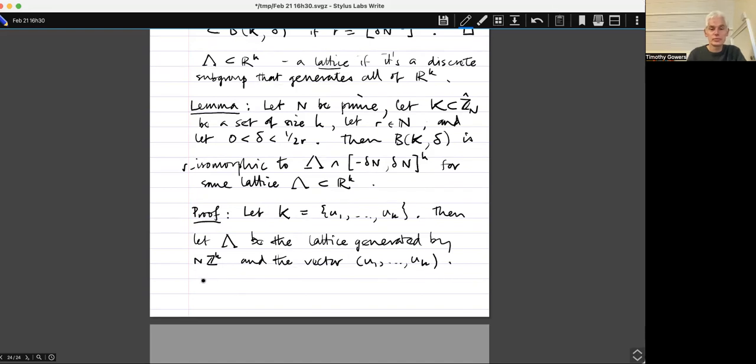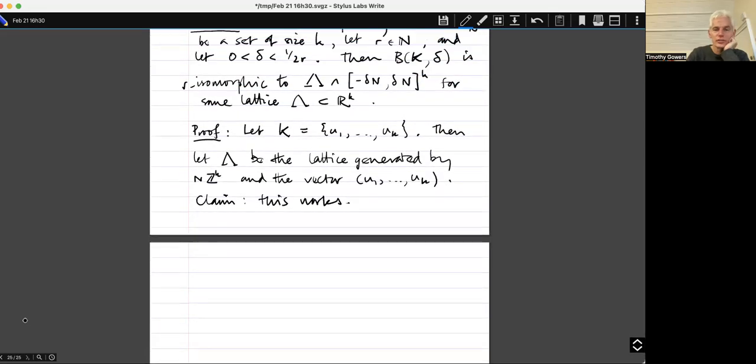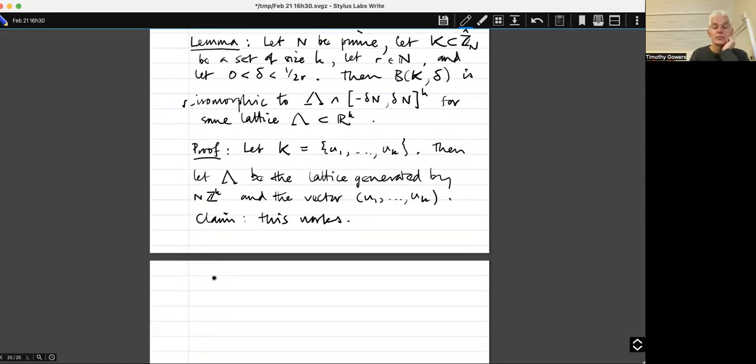So now I want to claim that this works. In other words, if I take that particular Lambda and I intersect it with my, this box here minus Delta N up to Delta N, I'm going to get a set that is R isomorphic to the Bohr set B K Delta. So first, so now I'm going to define the isomorphism. So given X belonging to B K Delta, define Phi X to be the vector, to be the vector U 1 X up to U K X.